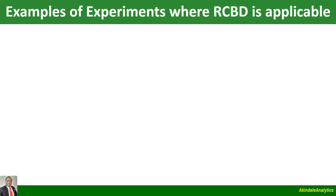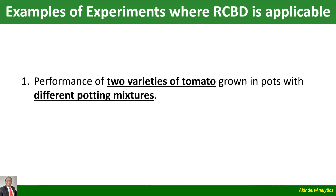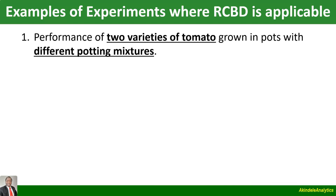Let's see some examples of experiments where Randomized Complete Block Design is applicable. The first one: consider an experiment where we are interested in the performance of two varieties of tomato grown in pots with different potting mixtures. Here, the treatments are the two varieties of tomatoes. The pots are the experimental units, but they have different potting mixtures, so we have to group the pots based on the potting mixture they contain, and we now randomly allocate our two varieties of tomato among pots within each potting mixture group.